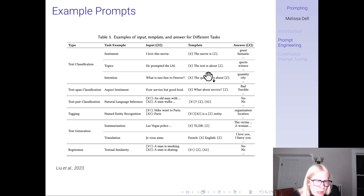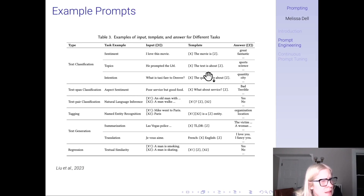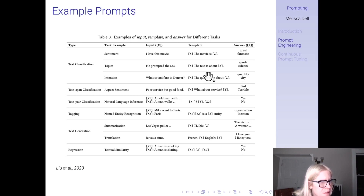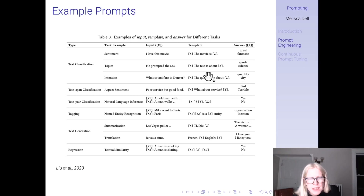Here are examples of prompts for different tasks: text classification like sentiment or topic classification; text span classification like aspect sentiment or named entity recognition; text pair classification like natural language inference; text generation like summarization or translation; and textual similarity. These are a bunch of standard tasks that give examples of templates.